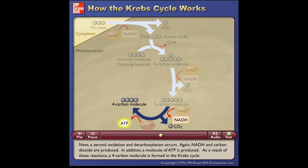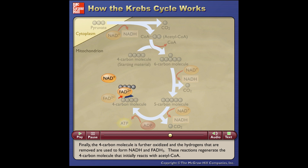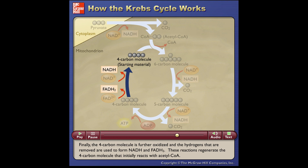In addition, a molecule of ATP is produced. As a result of these reactions, a four-carbon molecule is formed in the Krebs cycle. Finally, the four-carbon molecule is further oxidized and the hydrogens that are removed are used to form NADH and FADH2. These reactions regenerate the four-carbon molecule that initially reacts with acetyl CoA.